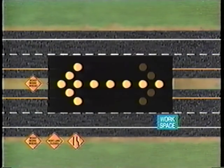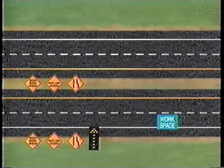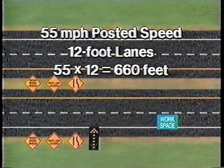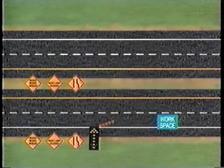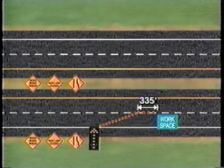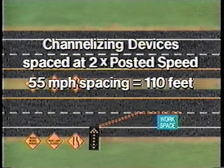1,000 feet from the lane transition sign, install the lane closure taper — the second element of traffic control. When setting up the taper, it is good practice to place your work vehicle or advance warning arrow display before the start of the taper for added protection. With a 55 mph posted speed and 12-foot lanes, the taper should be 55 times 12, or 660 feet long, consisting of 13 channelizing devices on 55-foot centers. A 335-foot buffer space and the work space are outlined by channelizing devices spaced at two times the posted speed — 110 feet for 55 mph.